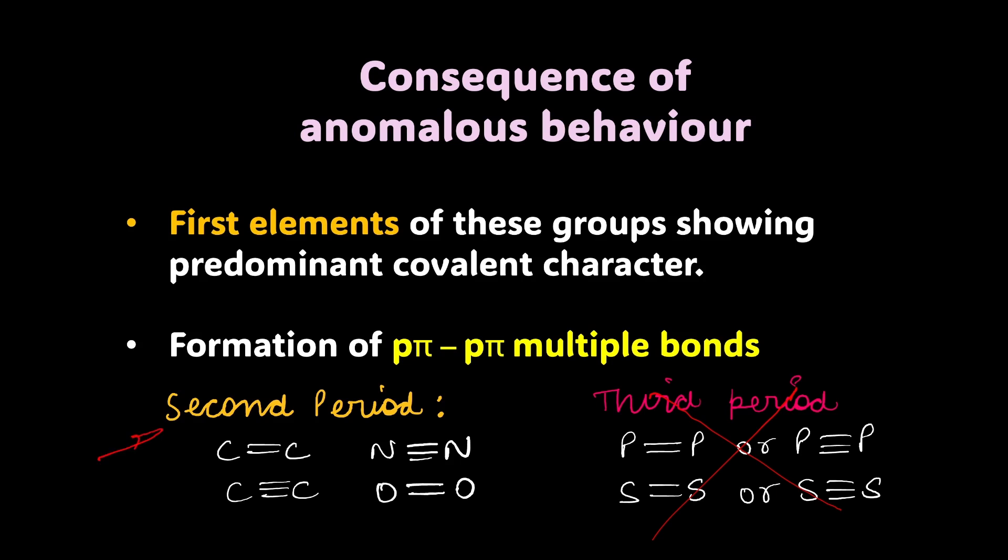So, second period is different because of so many reasons that we have learned and now that we have understood what causes anomalous behaviour and what's the consequence of the anomalous behaviour, let's learn about the diagonal relationship in the next video.